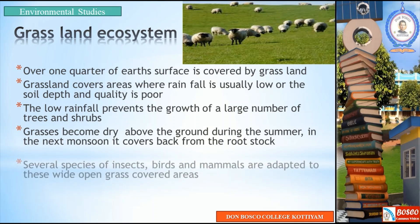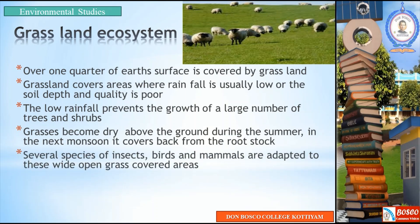Several species of insects, birds, and mammals are adapted to these wide open grass-covered areas. In the grassland ecosystem, insects, birds, and different types of mammals are all part of this system.